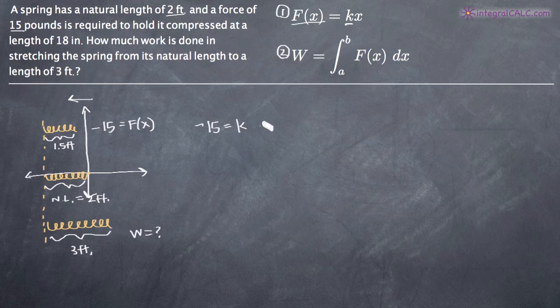So we leave k in there and we know that x is going to be negative 0.5. And the reason is because we go from a length of 2 feet at its natural length to a length of a foot and a half. So that ends up being the change from 2 to 1.5 is negative 0.5 or negative half of a foot.